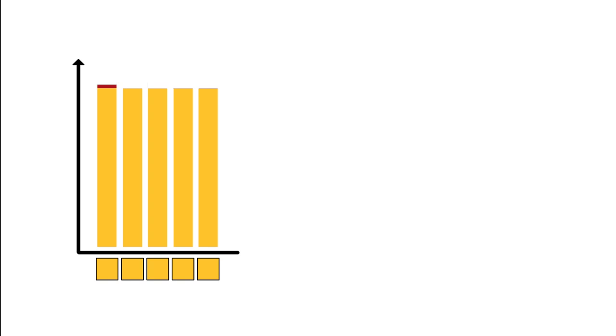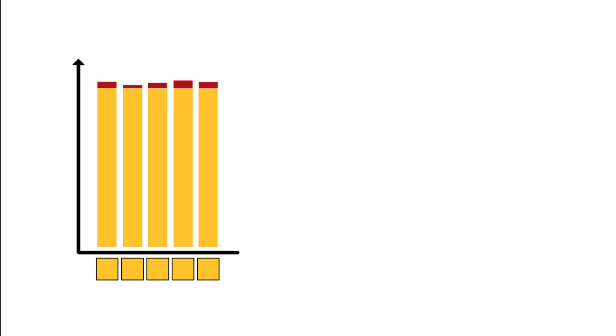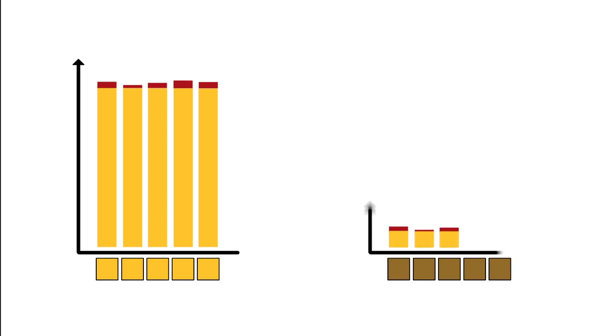The random nature of light particles will however lead to slight variations between individual pixels. When there's plenty of light, this random variation will be small compared to the overall value of each pixel. But when light levels drop, the random part will make up a larger portion of the pixel value.